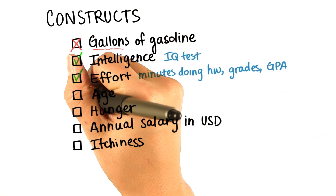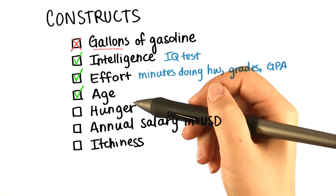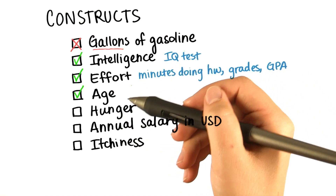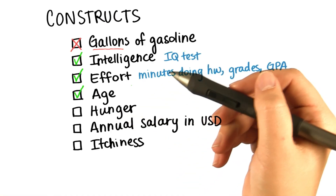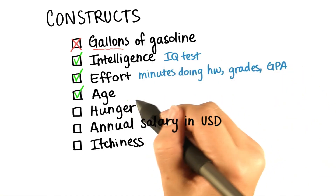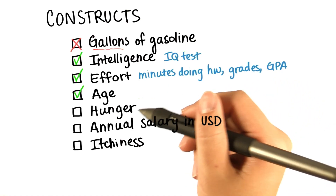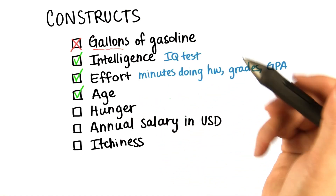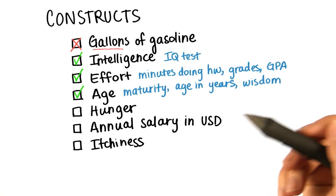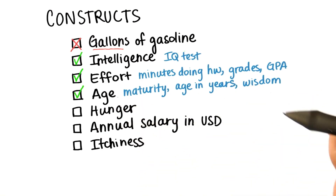Age is also a construct. If I had put age in years, I would have defined age as the number of years you've been living, but some people might look at age as how mature you are. Here, I didn't put a way of measuring it, and age, therefore, would be considered a construct in this case. So maturity, age in years, and wisdom are all three different ways you could possibly measure age.